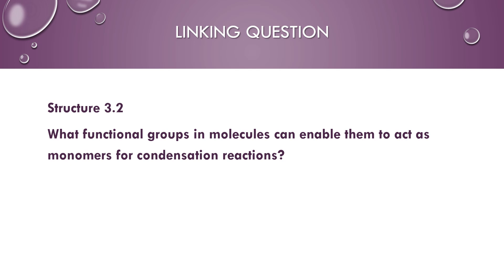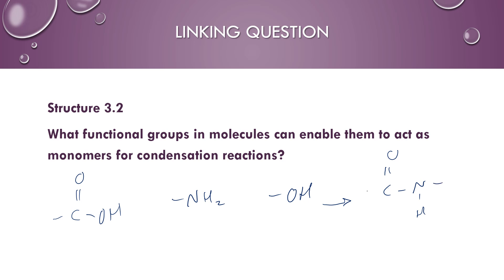The linking question asks what functional groups and molecules can enable them to act as monomers for a condensation reaction. We looked at those in this lesson: we have carboxylic acids, amines, and alcohols — those would act as the monomers. The functional groups that are formed are typically amides and polyesters, and occasionally you'll see an ether if two alcohols are reacting. Those are your functional groups for condensation reactions. Thank you.